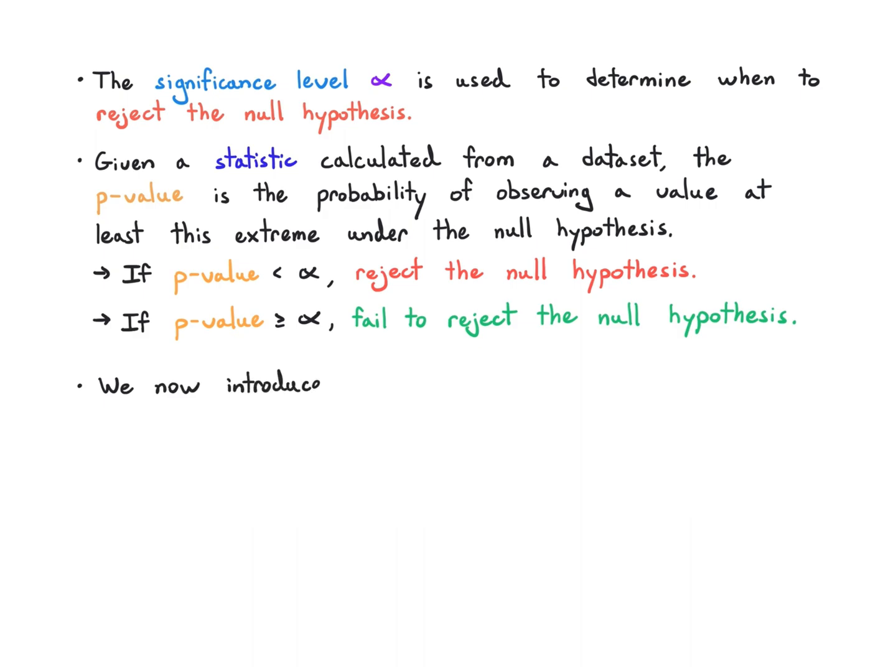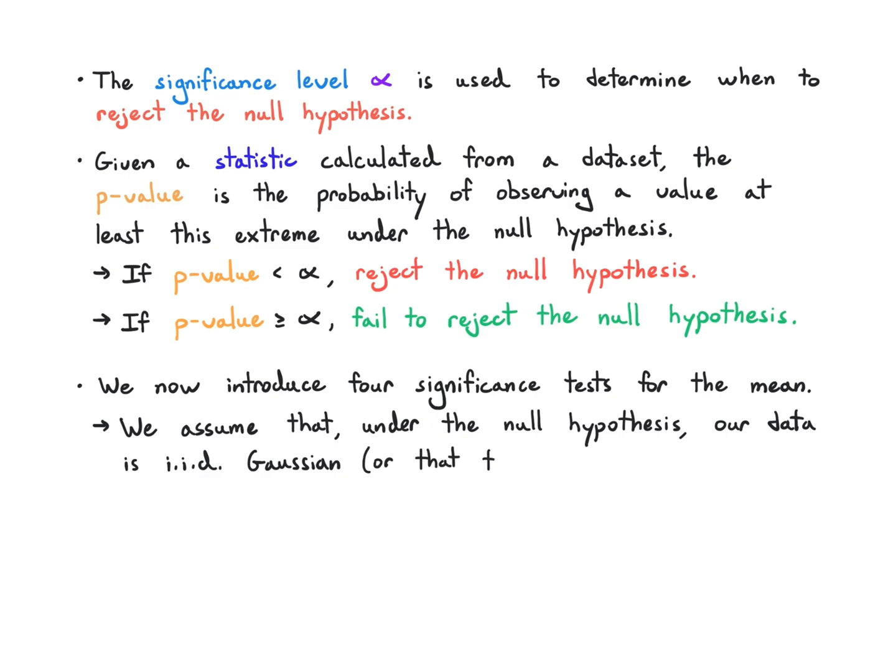We now introduce four significance tests for the mean. We're just going to focus on the mean in this video. We're assuming that under the null hypothesis, our data is basically IID Gaussian, or that this is a pretty good approximation. You can kind of see from these tests when what we mean by good approximation. If you're averaging a bunch of data, it tends to look Gaussian due to the central limit theorem. So if that's in effect, this is probably a good assumption.